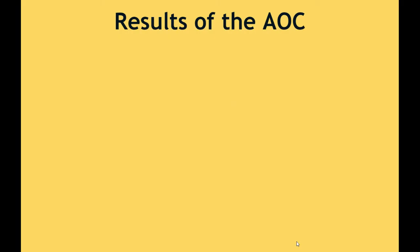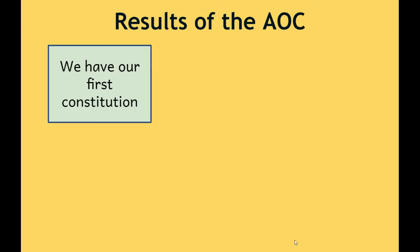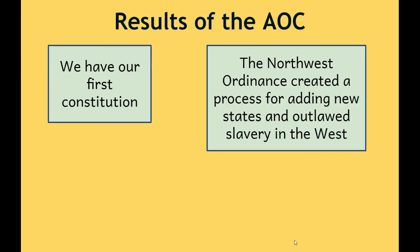As a result of the AOC, or Articles of Confederation, we have our first constitution — this is a good thing. We have our first written set of laws, our first attempt at being a country separate from Great Britain. Another result is the Northwest Ordinance. The Northwest Ordinance created a process for adding new states, and it also outlawed slavery in the Western territories. When we become independent in 1783, we are 13 states, but we don't stay that way for long. This Northwest Ordinance in our first constitution creates a process for adding new states.